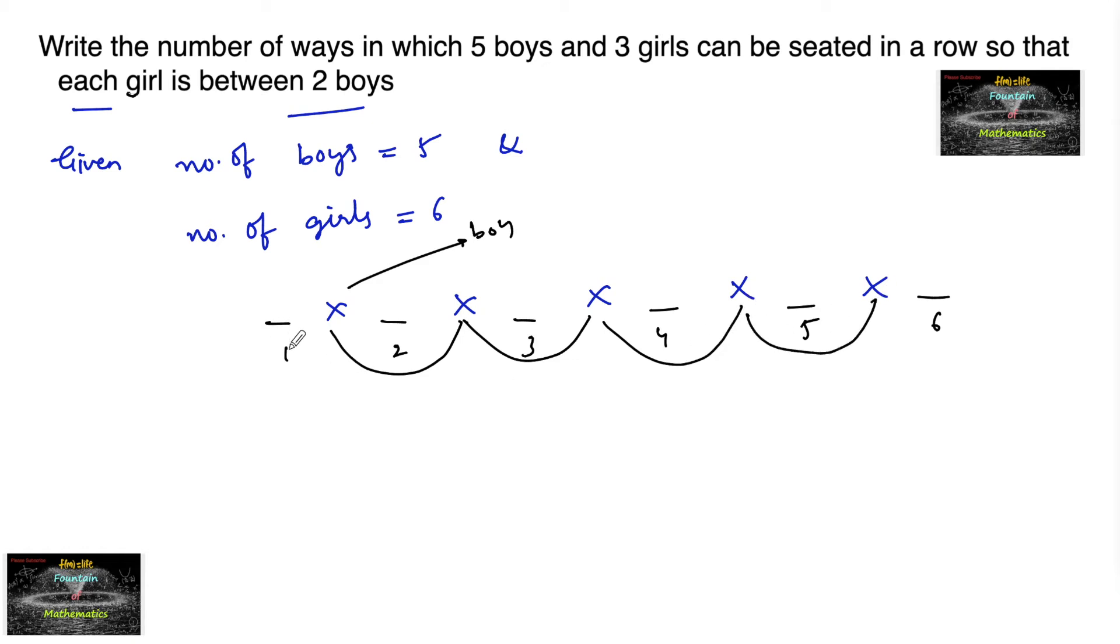So here the first position and the last position are not possible for a girl to be seated. So we can consider the second, third, fourth, and fifth gaps can be occupied by the girls.